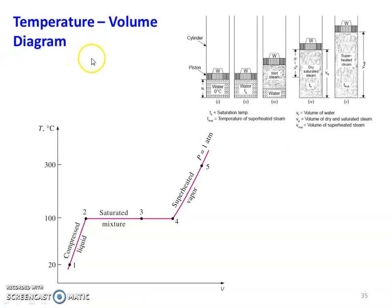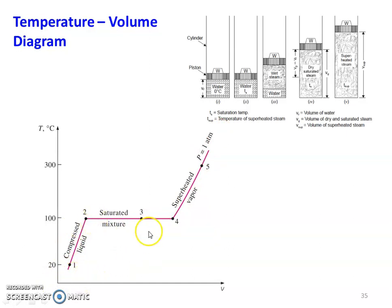Temperature-volume diagram. Temperature is on the y-axis and volume is on the x-axis. We are given the process from compressed liquid water to steam — covering compressed liquid, saturated mixture, and superheated steam. In the diagram: water at 0°C, water at saturation temperature, water plus wet steam, dry saturated steam, and superheated steam.